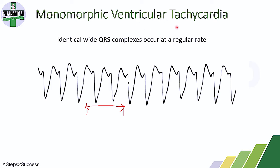It is happening in the ventricles, so it is called ventricular tachycardia. It is called monomorphic because all these wide QRS waves have the same structure — they are not disorganized. They are also occurring at a regular rate, meaning each QRS appears at a uniform interval. So the number of heartbeats is increased, the QRS waves are wide, and they occur faster and uniformly.